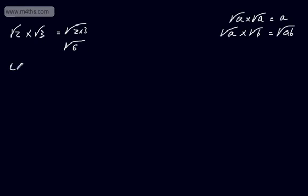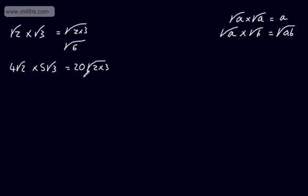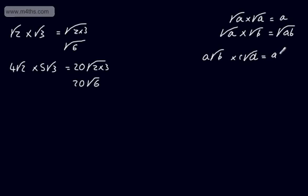Let's say we've got 4 root 2 multiplied by 5 root 3. This time we have a value outside the root in both cases. All we need to do is multiply those two values: 4 times 5 is 20, and then multiply the surds — 2 times 3 under the root — giving us 20 root 6. So all I've done is multiply the 4 and the 5, and then the surds. In general, if we have A root B multiplied by C root D, we end up with AC multiplied by the root of BD.